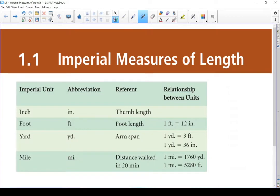As some reference, an inch is about the length of the first knuckle of your thumb. A foot is about the length of your foot, and there are 12 inches in a foot. A yard is about the span of one of your arms - not both, one of your arms. There are 3 feet in a yard and 36 inches in a yard. And a mile is the distance you can walk in 20 minutes. A mile is 1,760 yards or 5,280 feet.